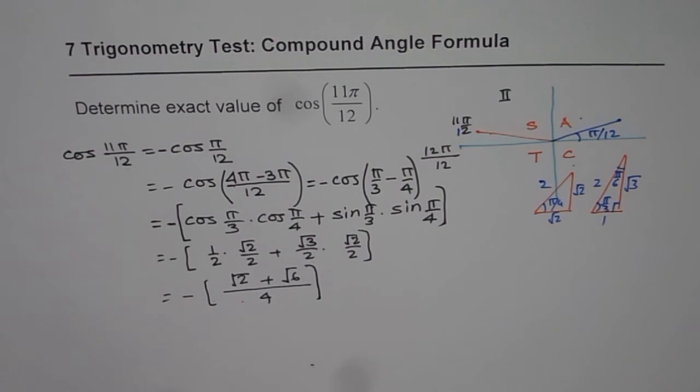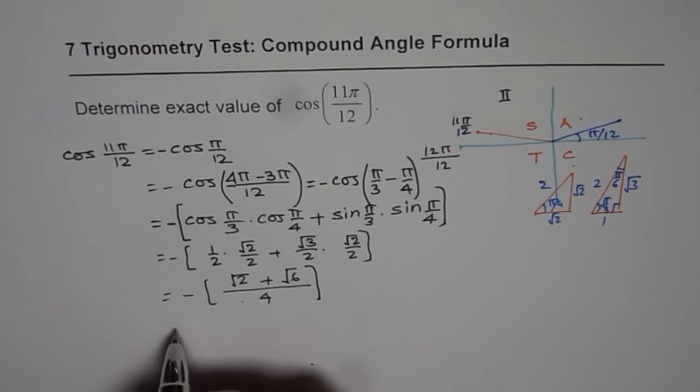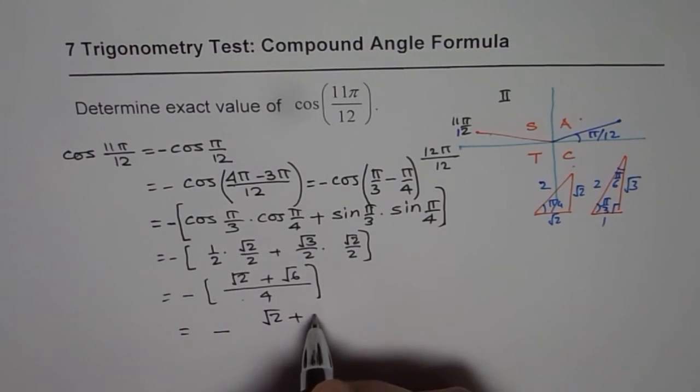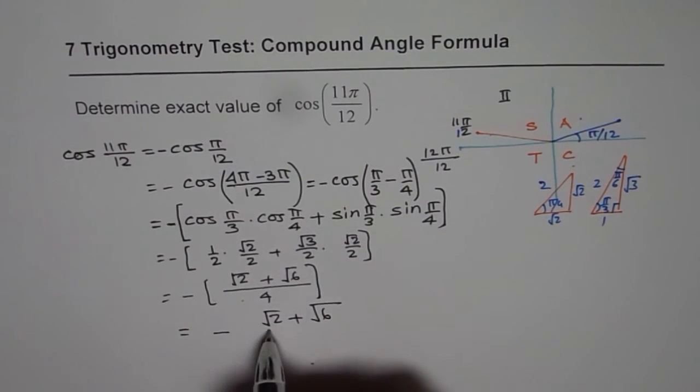So that becomes your answer for this particular question. So we can write down our answer clearly which is minus of square root 2 plus square root 6 over 4.